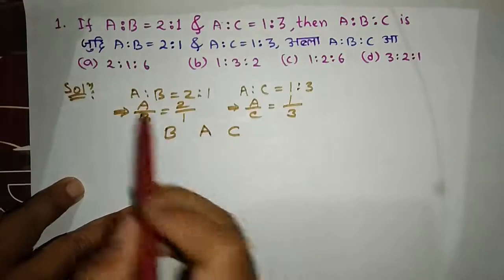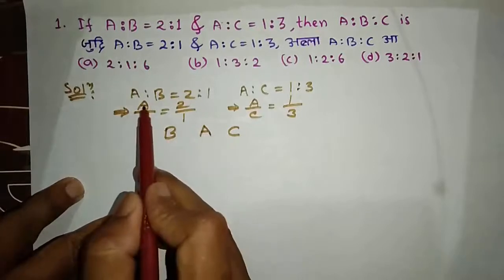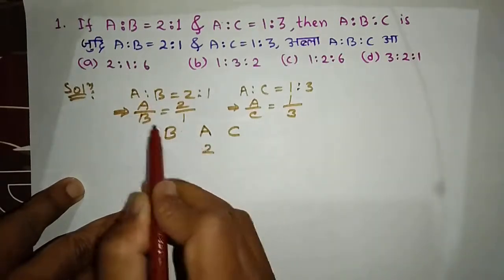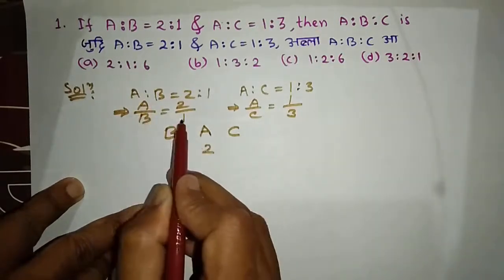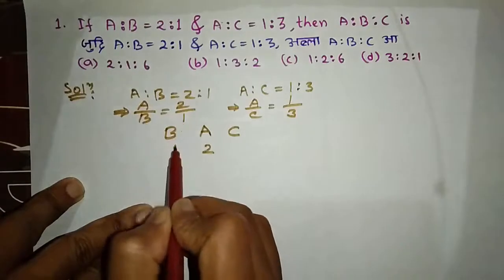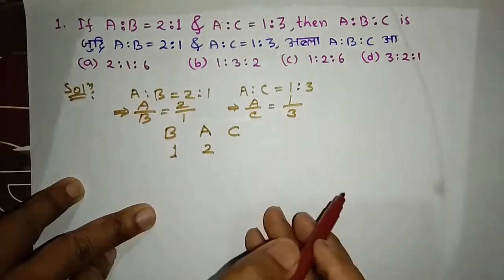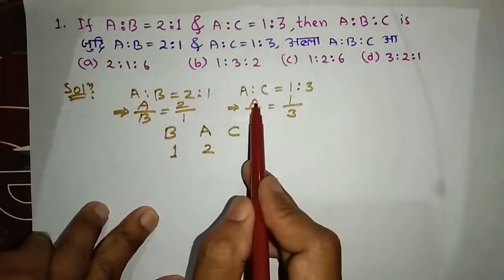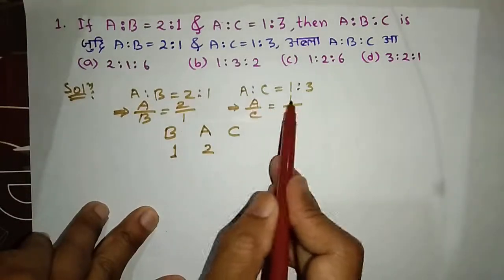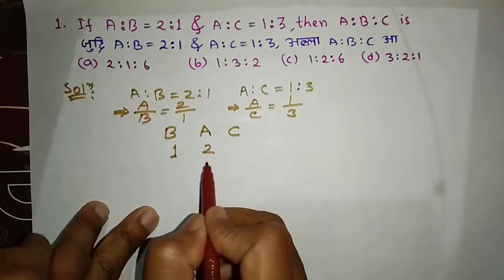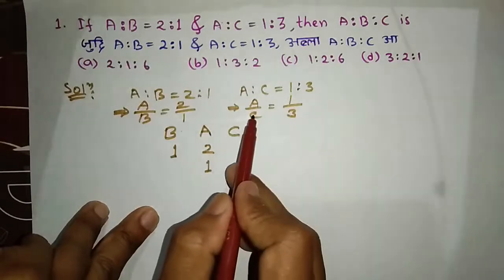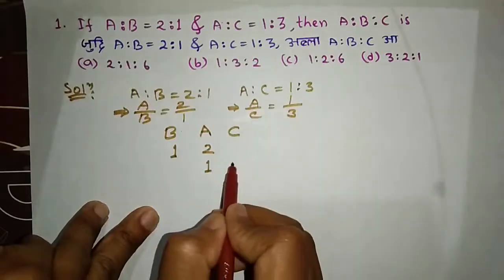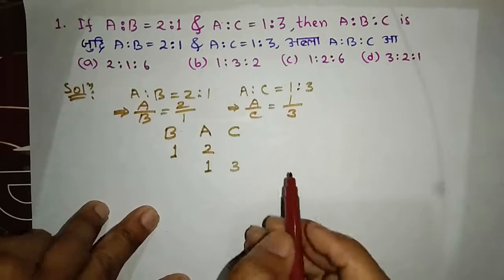So a is equal to 2, b is equal to 1, and a is equal to 1. This one is equal to 1. Now there are 3, so 3 is equal to 3.